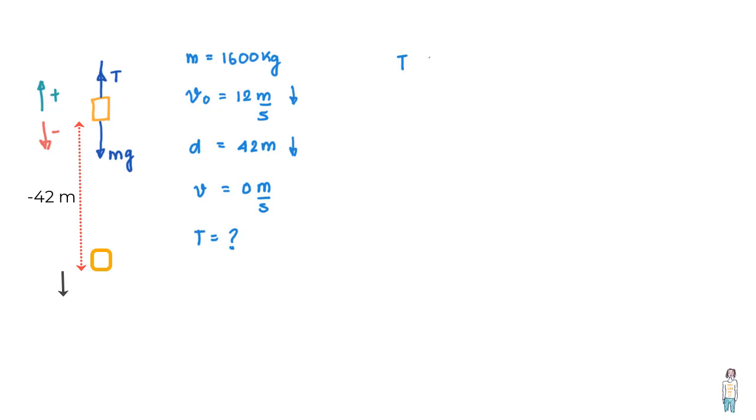And another force mg which is acting in downward direction, we write it as mg. So the net force is T minus mg and this net force should therefore equal to the product of mass and acceleration experienced by the body or the elevator in this case. Now we know mass, we know g, we have to find T but we don't know A.